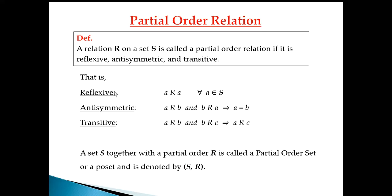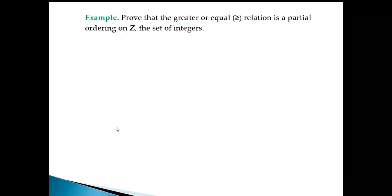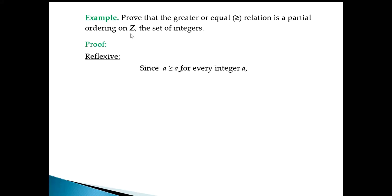Let's prove that the 'greater than or equal to' relation is a partial order relation on Z, the set of integers. For reflexive: since a ≥ a for every integer a — any number is greater than or equal to itself — the relation holds. Therefore the ≥ relation is reflexive.